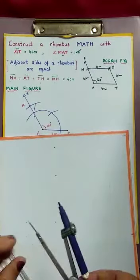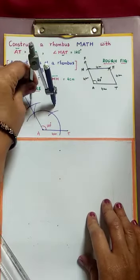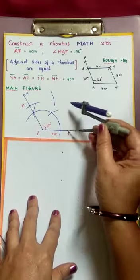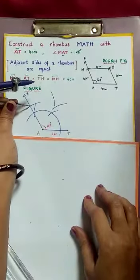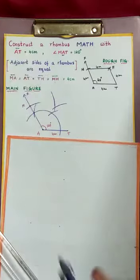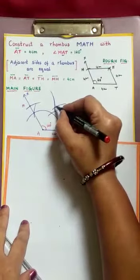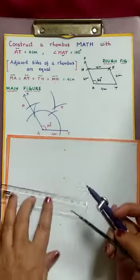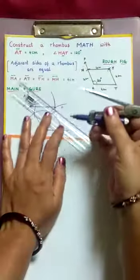For rhombus it is very easy, children. With the same radius, we will draw the arcs. With M as center, draw an arc with 4 cm radius. Again, with the same radius, cut this arc. Since these two arcs are not intersected, go back to point M and extend the arc. Now intersected. Where these two arcs intersect, name it as H. Now join MH and HT.